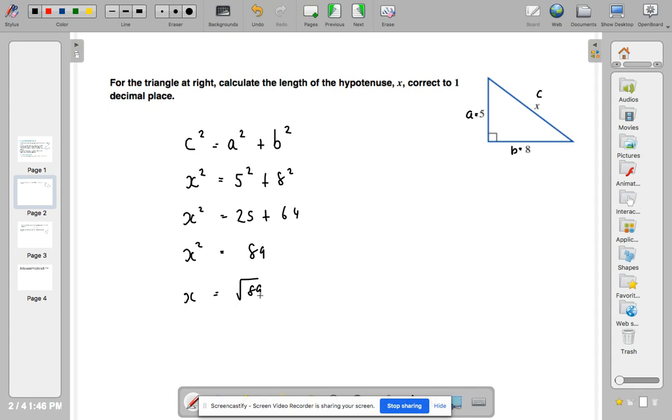Okay, so let's have a look at the square root of 89. We can work that out on our calculator quite easily. So I'll just do that.